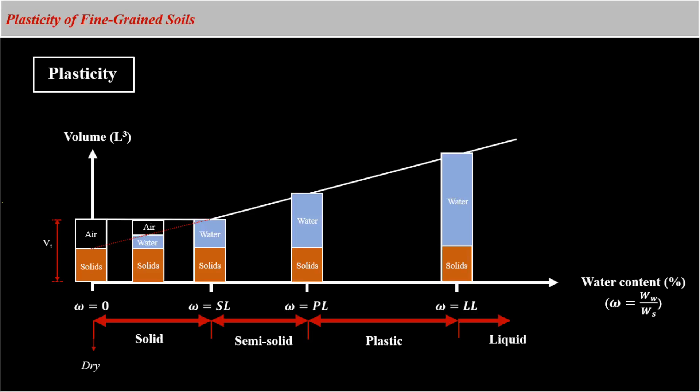So hopefully by now you are familiar with the concept of plasticity in fine grained soils. A scientist named Atterberg was the first person who studied the plasticity. And he found out that fine grained soils might appear in four different states or consistencies, which are solid state, semi-solid state, plastic state, or liquid state. To better visualize these states or consistencies, let's look at this graph, which presents the change in the volume versus the change in the water content.